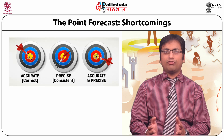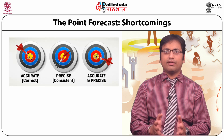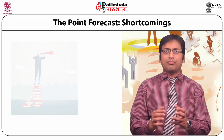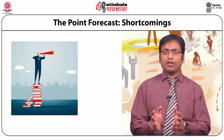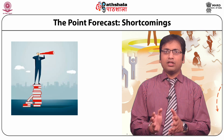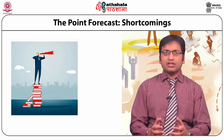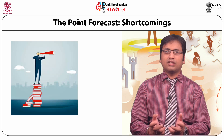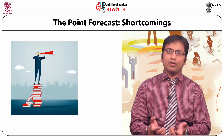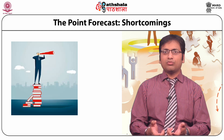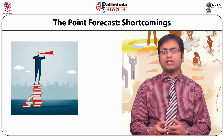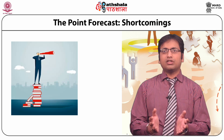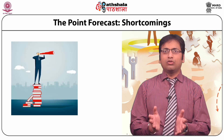The point forecast — this approach of predicting an exact value or judging the best guess — has the following shortcomings. Point forecast approach is helpful in predicting events which are certain to happen in the near future. For instance, predicting tomorrow's weather would be easy based on today's weather conditions, but it would be difficult to pinpoint exactly what the temperature will be tomorrow morning. Thus, this approach should be applied to forecast for very short-term periods and for events whose outcomes are known with certainty.